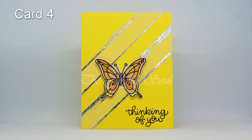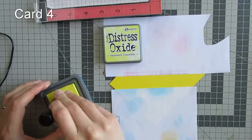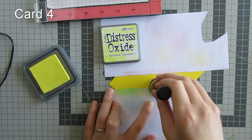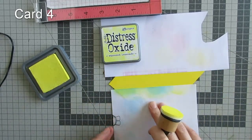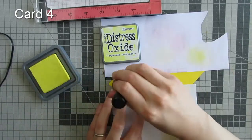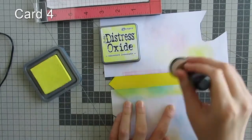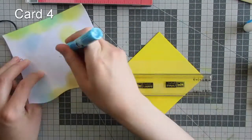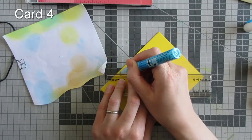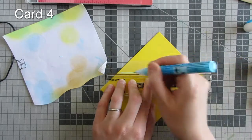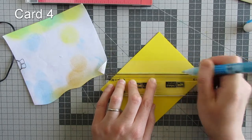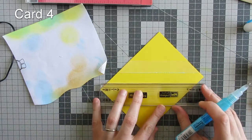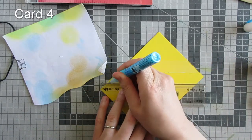For card number four, I started by masking off a yellow card base made from the bright yellow card that came in the kit to ink blend over it with Squeezed Lemonade ink. Then I'm using a ruler and my glue pen to add some lines of glue along the edges of the ink-blended stripes. I slid the ruler instead of picking it up, so the glue smudged a bit.